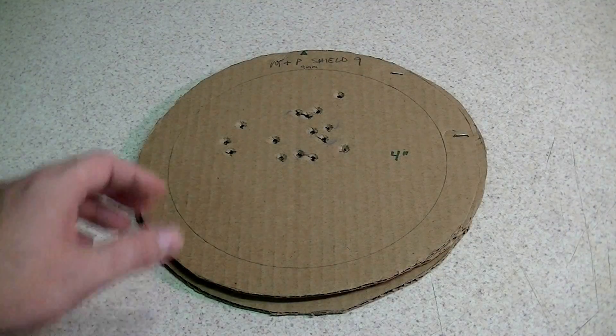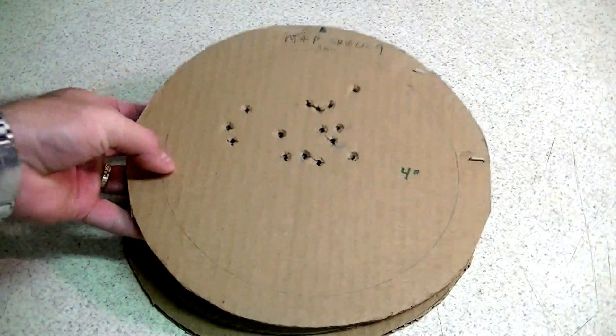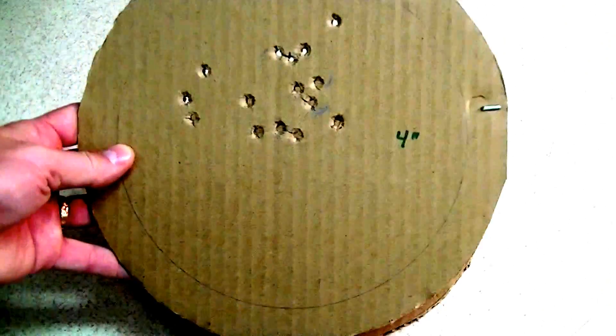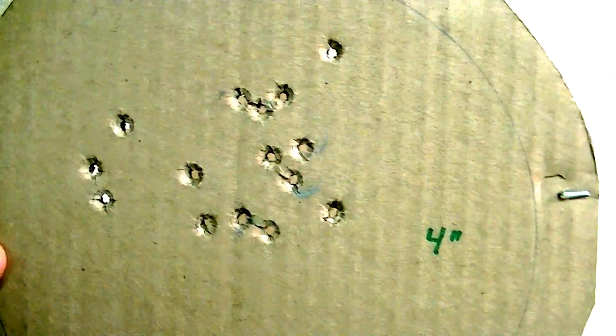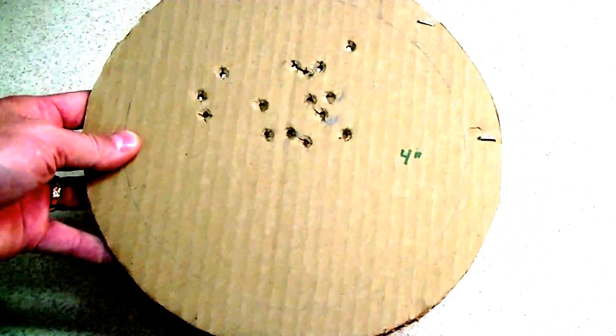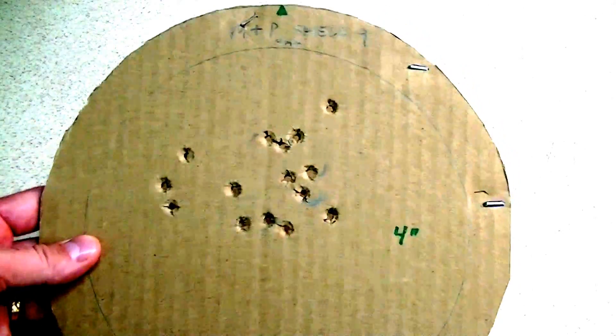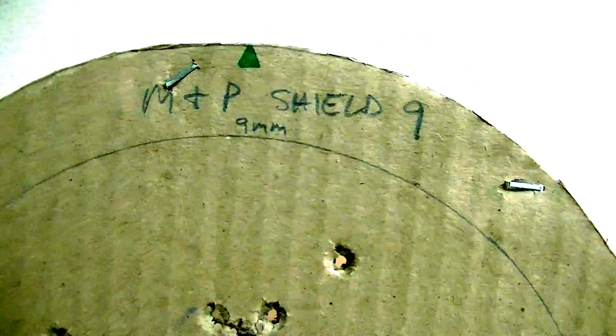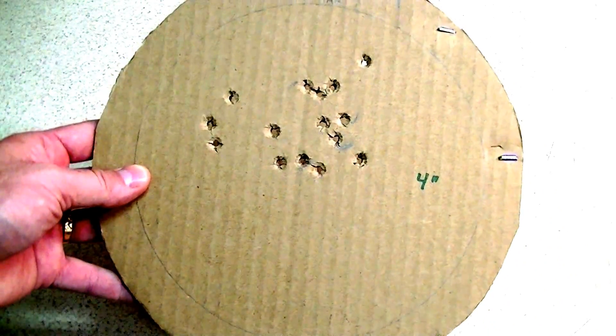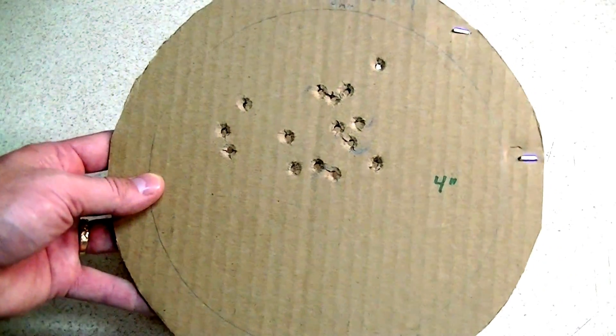First rounds that I put downrange were with my M&P Shield chambered in 9mm. You saw that was from appendix, out of my deep concealment holster, and we ended up with a 4-inch group. Ran the test five times, three rounds apiece. 4-inch group, M&P Shield 9. 9mm, great gun, I love it, really love that gun.